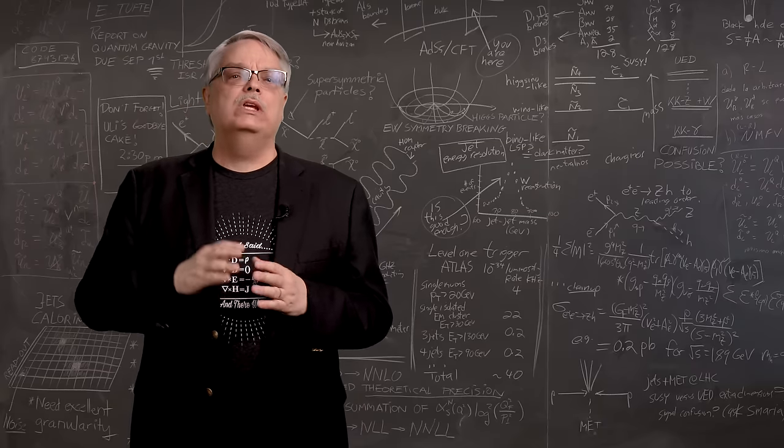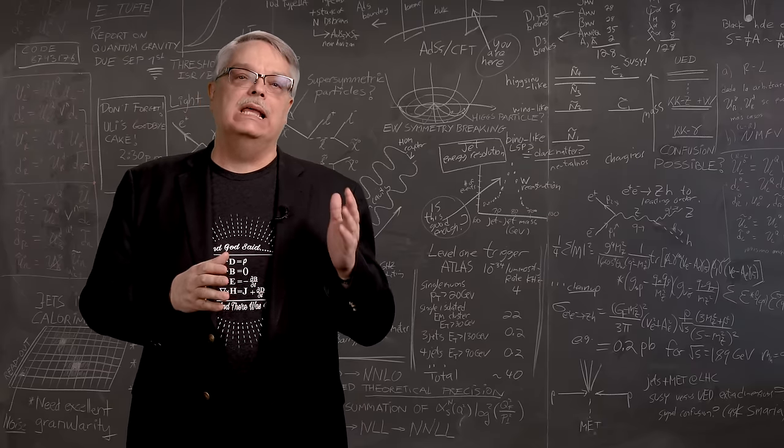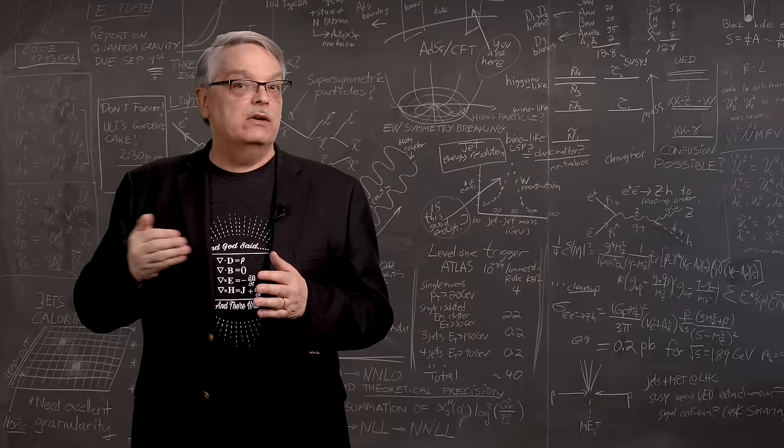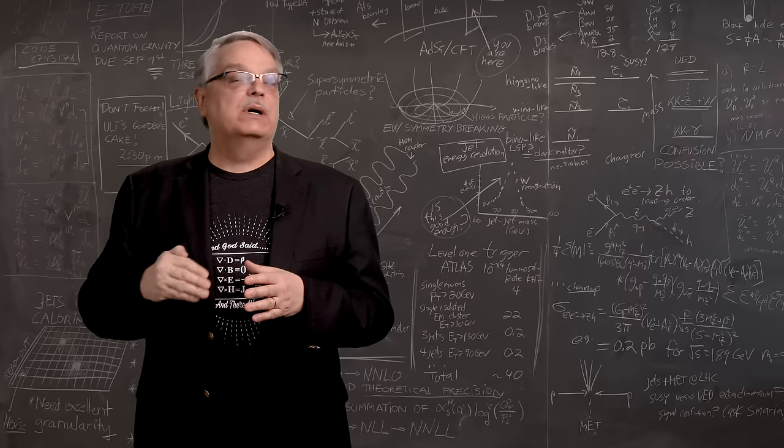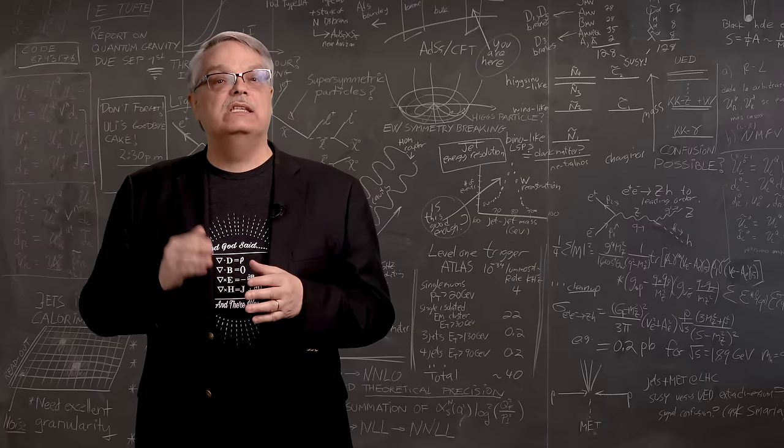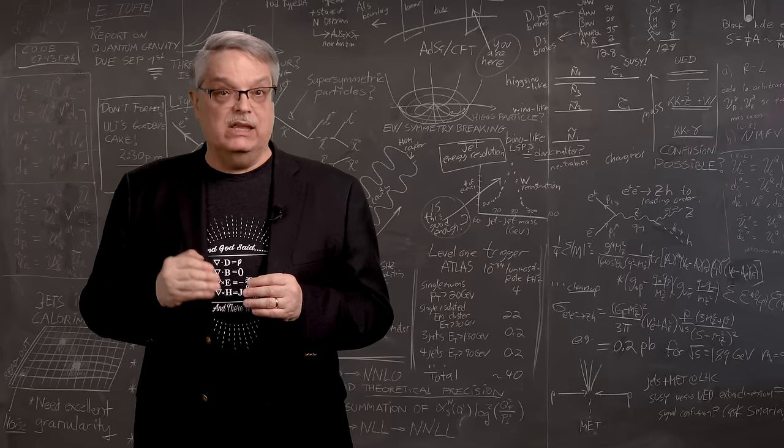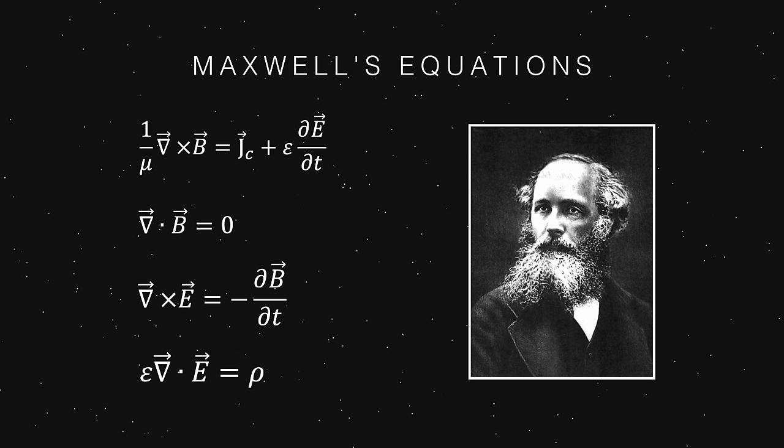It turns out that the only way to really answer the question of why light bends when it goes from air to glass is to get serious about the nature of light and to embrace the fact that it is made of oscillating electromagnetic fields. And that means you need Maxwell's equations.